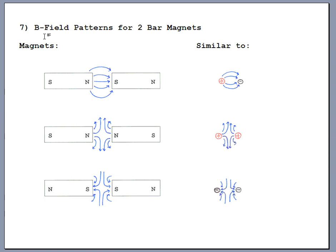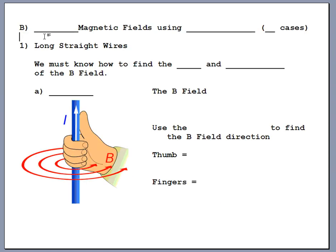So far we've been looking at seven issues for permanent magnets made of iron, cobalt, or nickel — heavy and awkward things. Part B: how can we create magnetic fields using just steady currents — currents continuing at a nice constant pace? There are two cases you need to be aware of.